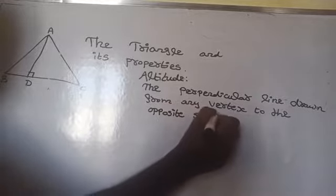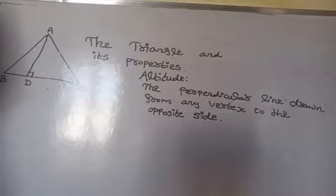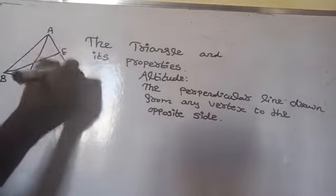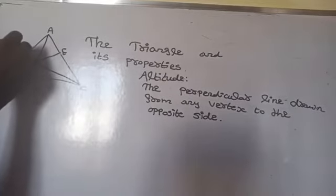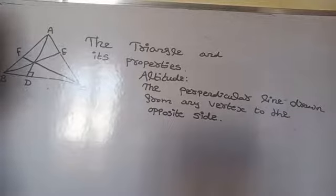The perpendicular line drawn from any vertex to the opposite side is called the altitude. How many altitudes can be drawn? Three altitudes can be drawn from each vertex.